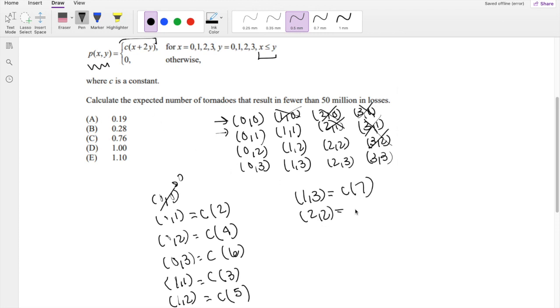For 2, 2, that will be C times 6. For 2, 3, when I plug it in there, that is C times 8. And lastly, 3, 3. That's 3 times 2, 6 plus 3, which is 9. So that's all we have.